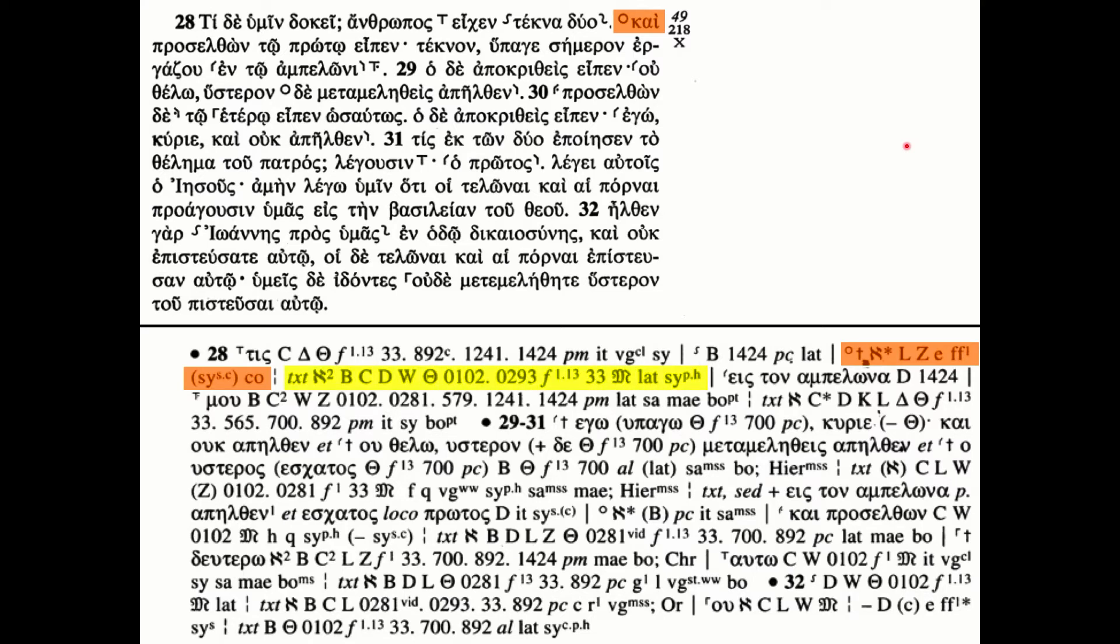However it shows the evidence that supports reading chi in the manuscript. So Aleph second corrector, Uncials B, C, D, W, Theta and so on and of course the majority text shown by that M there toward the end all preserve chi in their reading. This is how you would differentiate which manuscripts have chi and which omit it.